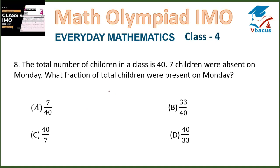Question 8: The total number of children in a class is 40. Seven children were absent on Monday. What fraction of the total children were present on Monday? Since 7 were absent, 33 were present. The fraction is 33 over 40. Option B is the correct answer.